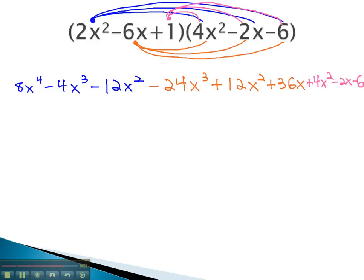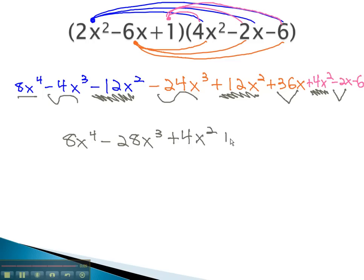We end up with lots of terms and almost no space. The next step is the same. We need to combine like terms. There is no term like the 8x to the fourth. Negative 4x cubed and negative 24x cubed is negative 28x cubed. The negative 12x squared plus 12x squared plus 4x squared is positive 4x squared. 36x is like the negative 2x, giving us 34x. Finally, negative 6 completes our problem.